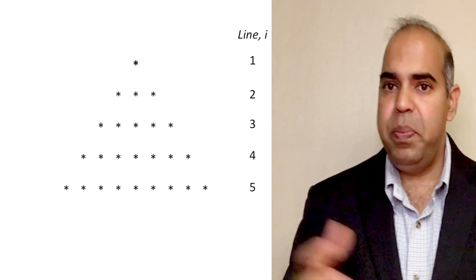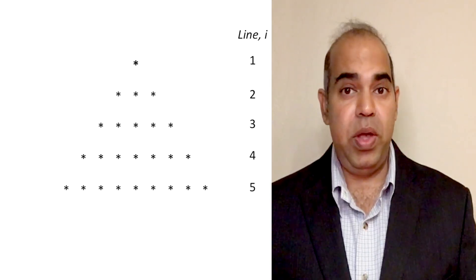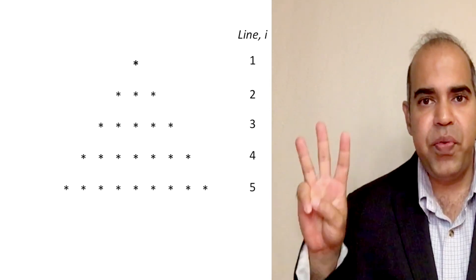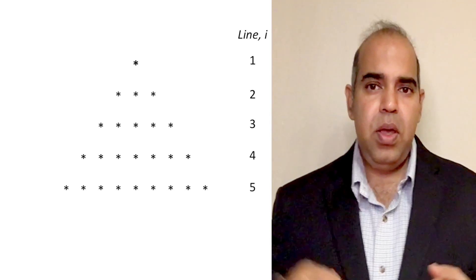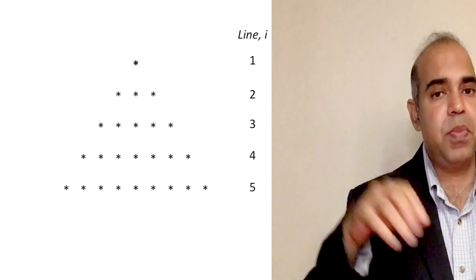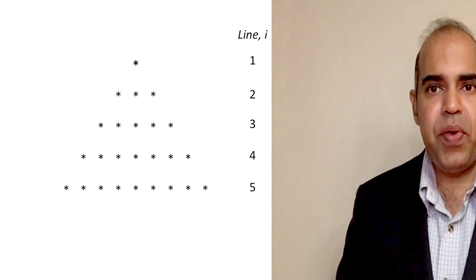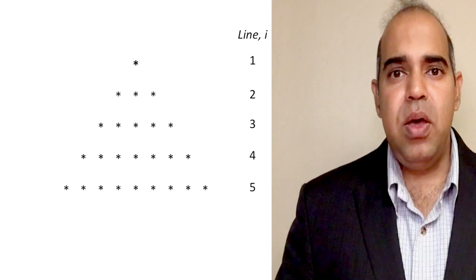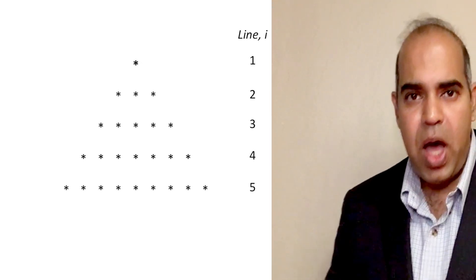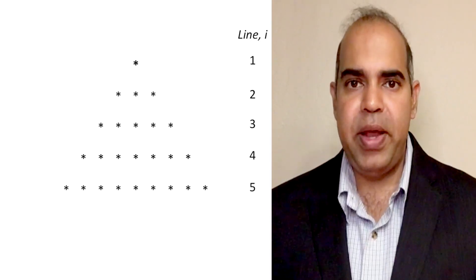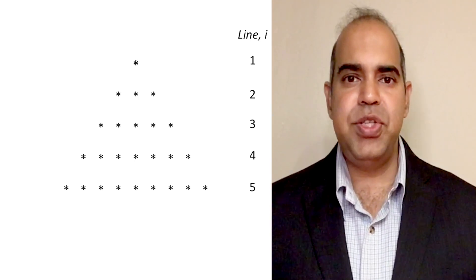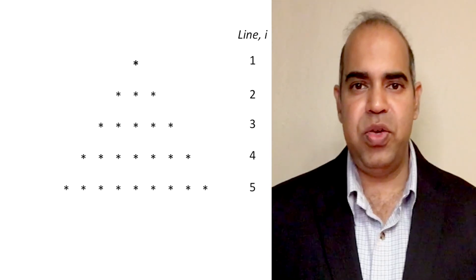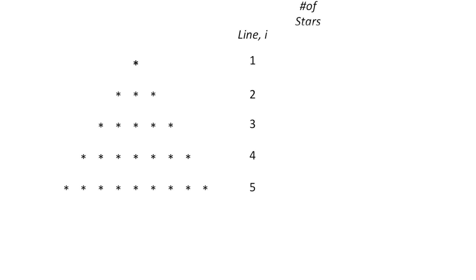When we are in line 1, we print 1 star. When we are in line 2, we print 3 stars. When we are in line 3, we print 5 stars, and so on. The question we are trying to frame is: when we are in the ith row, how many stars will we print? Notice that the number of stars to be printed is equal to 2 times the line number minus 1. Let us check if this hypothesis is correct for our running example.